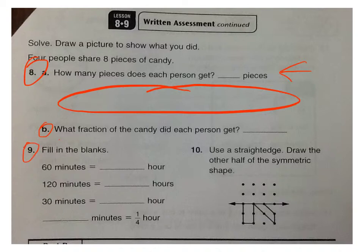Number 9. Fill in the blanks. 60 minutes equals blank hour. So how much of an hour? You'll have to know how many minutes are in an hour. 120 minutes is equal to how many hours? And how are 60 and 120 related? That might help you. 30 minutes is how much of an hour. And then how many minutes are in a quarter of an hour? So one fourth of an hour. Look at a clock, see how you divide that up. Try to figure out how many minutes are in a quarter of an hour.